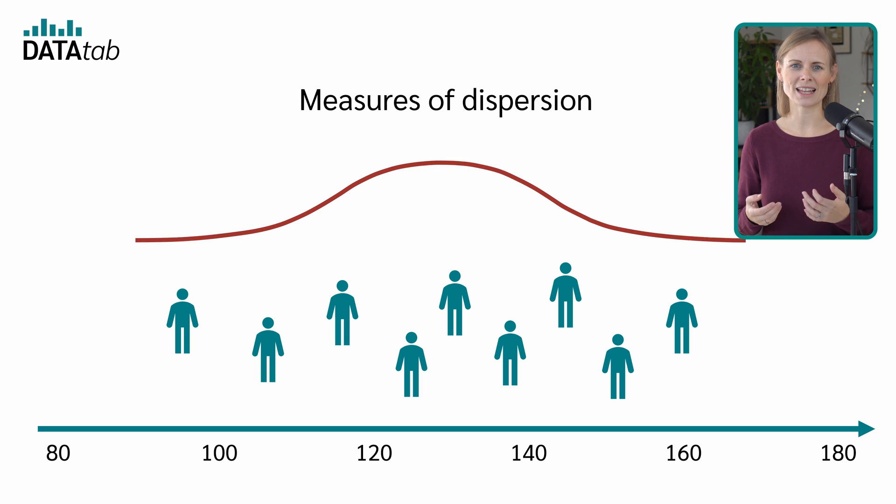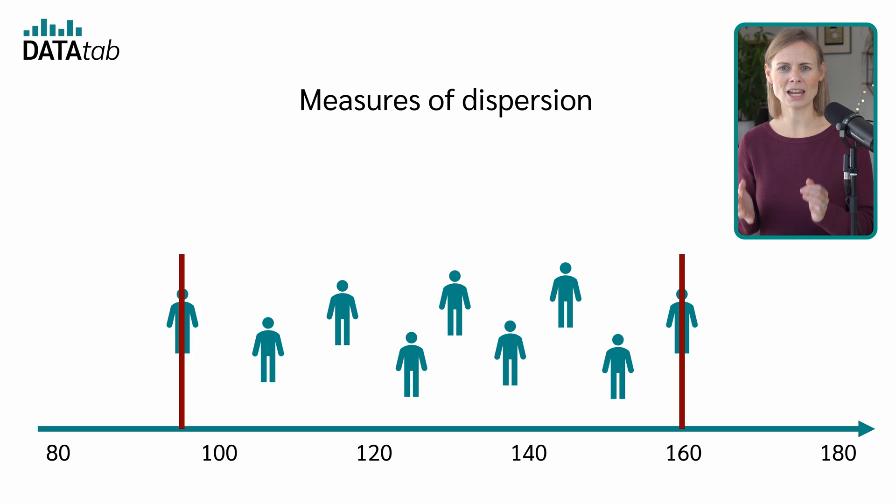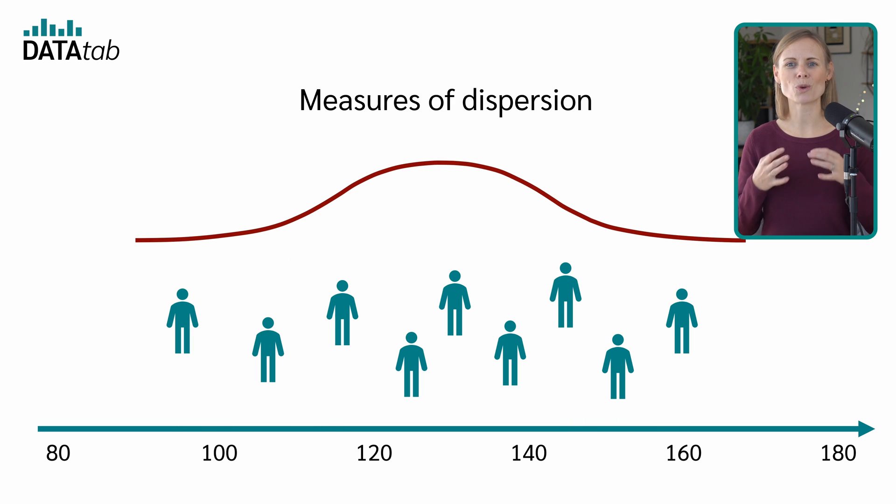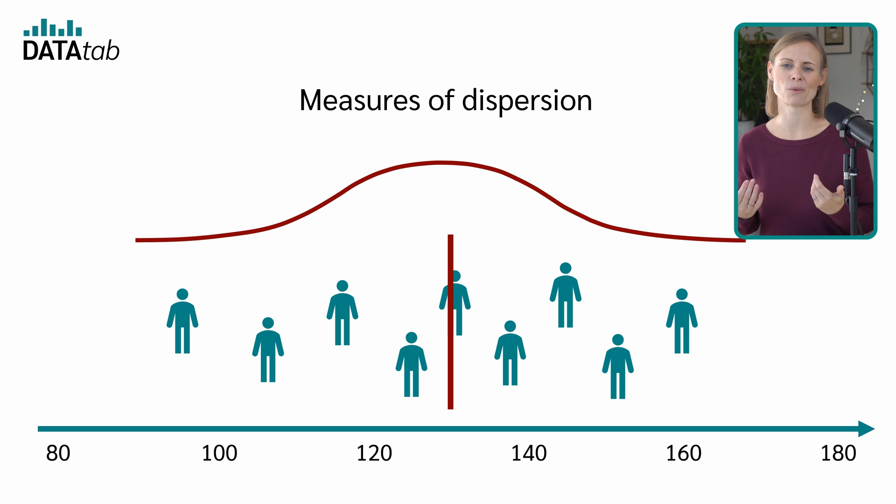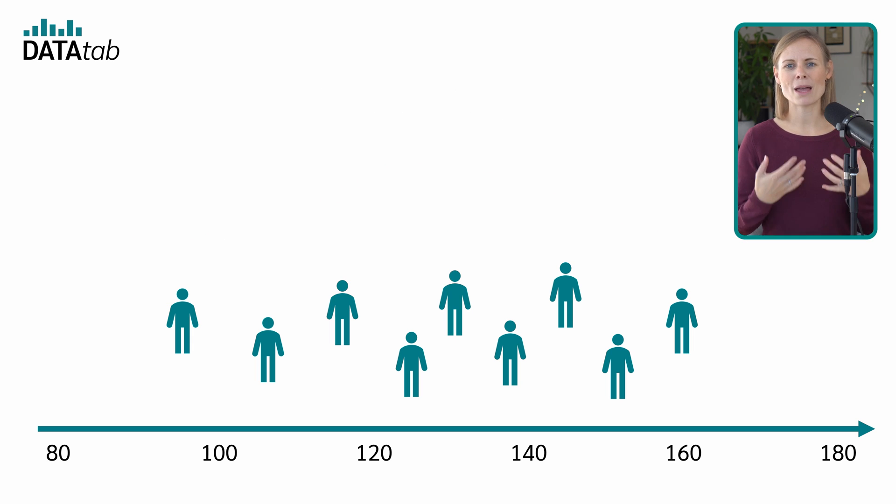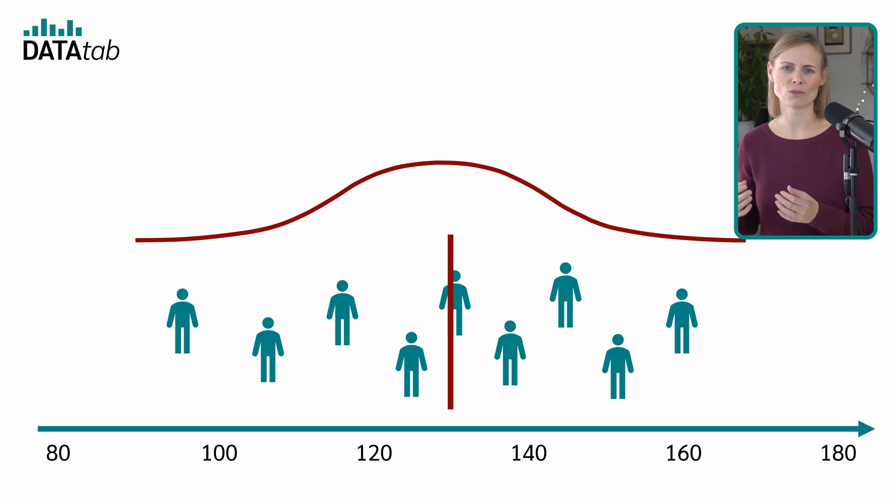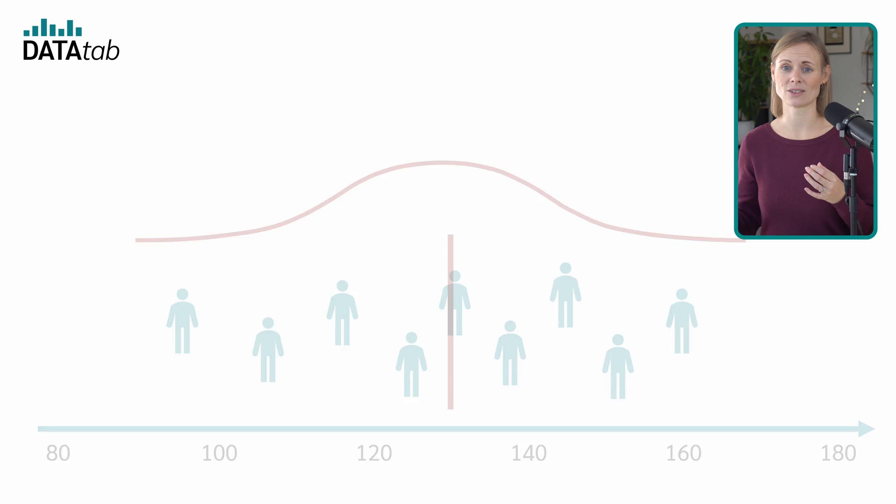Measures of dispersion, like the standard deviation, the range, and the interquartile range, indicate how spread out the data points are, whether they are closely packed around the center or spread far from it. In summary, while measures of central tendency provide a central point of the dataset, measures of dispersion describe how the dataset is spread around that center.